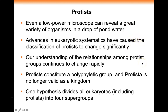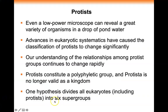Protista is polyphyletic — poly means many — so many branching groups, which is why Protista is not a kingdom. One hypothesis divides all eukaryotes into supergroups. A previous book used four supergroups; this textbook uses six. I am going to skip one of them, and the exact number doesn't really matter because it's going to keep changing.